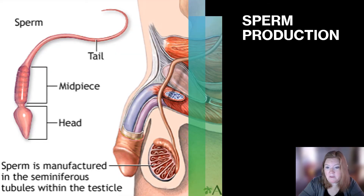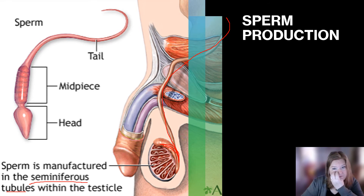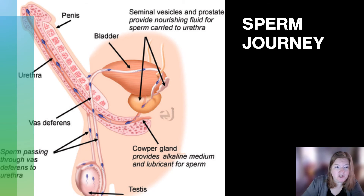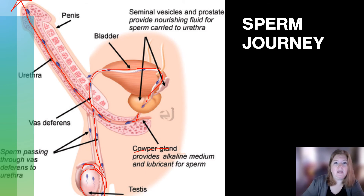Where are sperm produced? They are produced in the seminiferous tubules within the testicles. Then sperm are stored in the epididymis for about two weeks, and they travel up the vas deferens to the ejaculatory duct, where they combine with fluid from the seminal vesicle and from the prostate to produce semen. They get fluid from the prostate and the seminal vesicle — there are other glands too, like the Cowper's gland — and through the ejaculatory duct they enter the urethra, following the path of the urethra and out the tip of the penis.